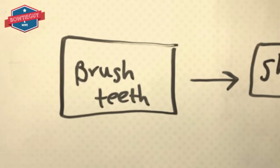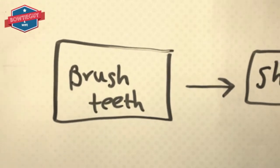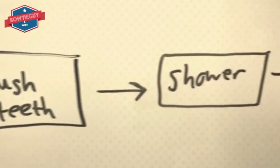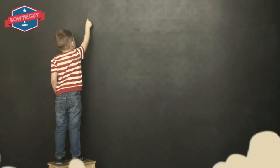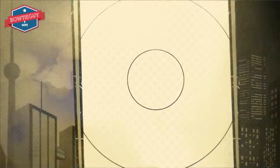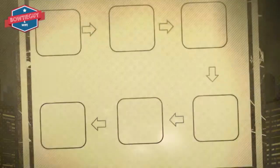This is a flow map. These are my morning routines before I go to school. First, I brush my teeth. Then I shower. Then I get dressed. Then I eat my breakfast. Then I drive to school. Flow map.